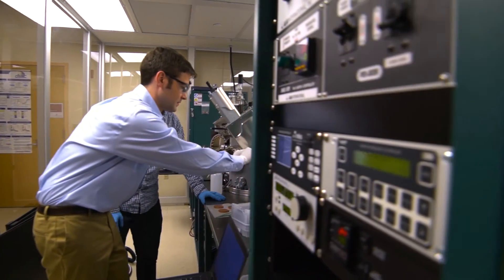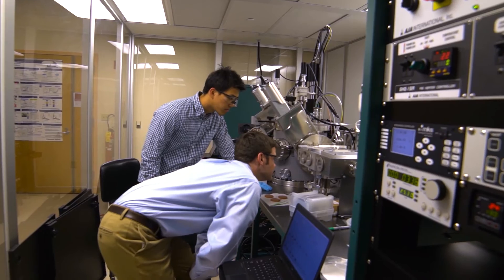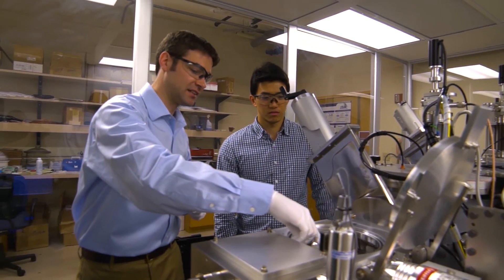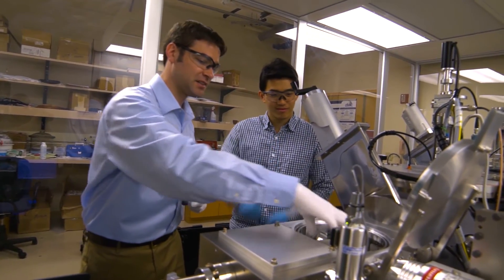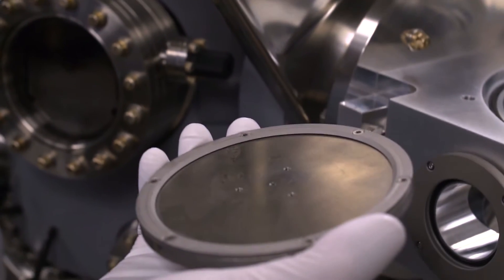So how do we discover new materials? We're using a technique in our group called combinatorial materials. So we can actually prepare a sample that is, say, a four-inch disk, and every point on that disk corresponds to a unique individual composition.